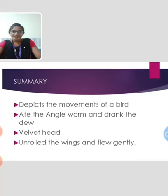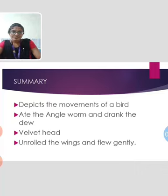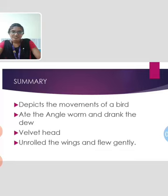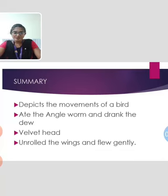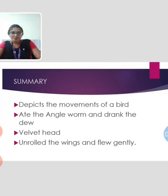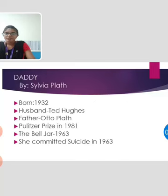In this poem, Emily Dickinson depicts the moments of a bird which came down the walk and ate an angleworm. Then it drank the dew from a grass and was looking around with its velvet head. Here, velvet head is a metaphorical comparison, like one in danger. When the speaker offered breadcrumbs, the bird opened its wings and flew away like an ocean butterfly and fishes made their journey effortlessly. The bird unrolled its feathers and flew softly. The theme of the poem is nature.